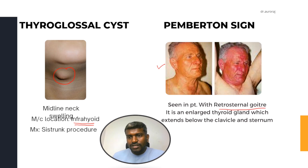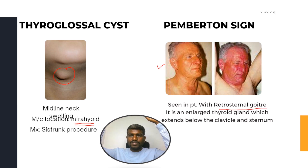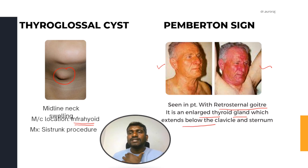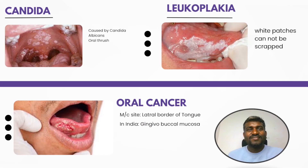Look at this patient — he is a patient of retrosternal goiter. When you ask the patient to lift both his hands, this is what you're going to see in his face. It is due to the enlarged thyroid gland which extends up to the clavicle and to the sternum.